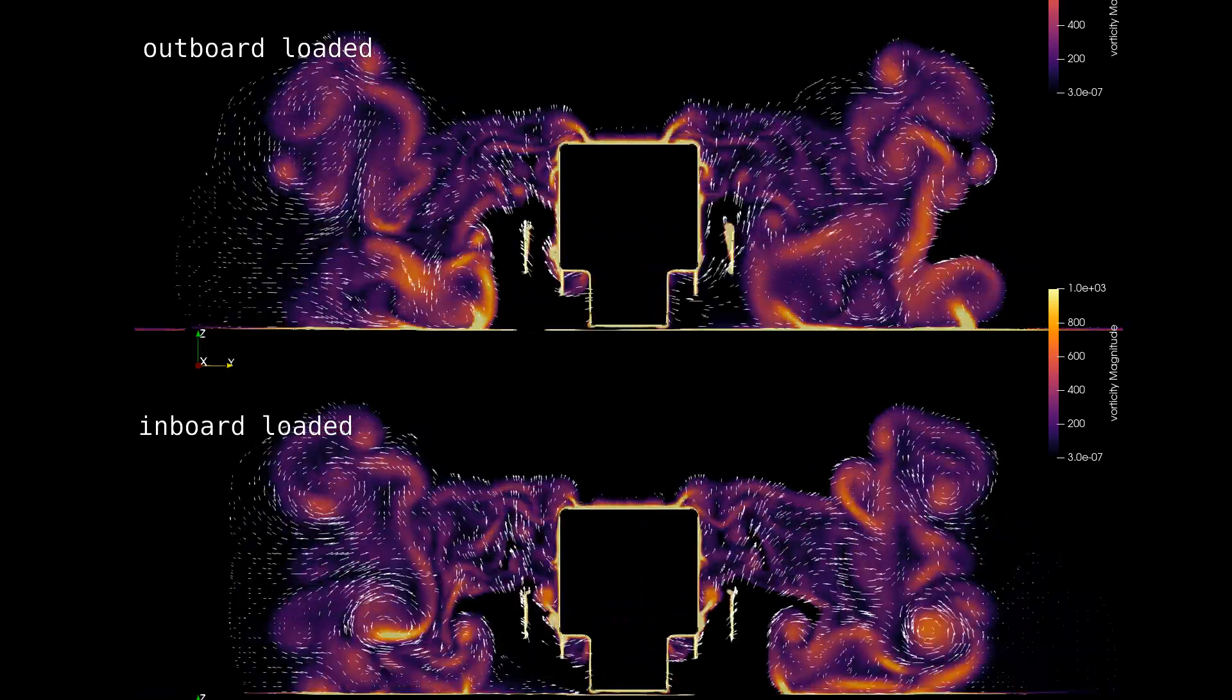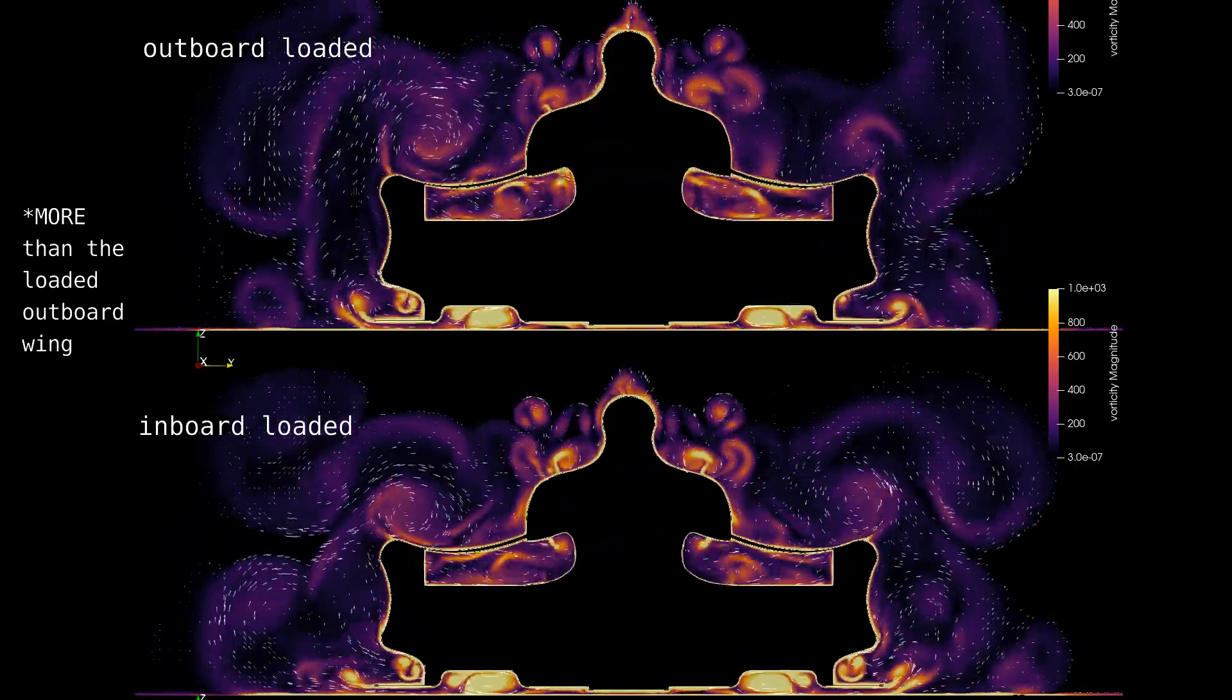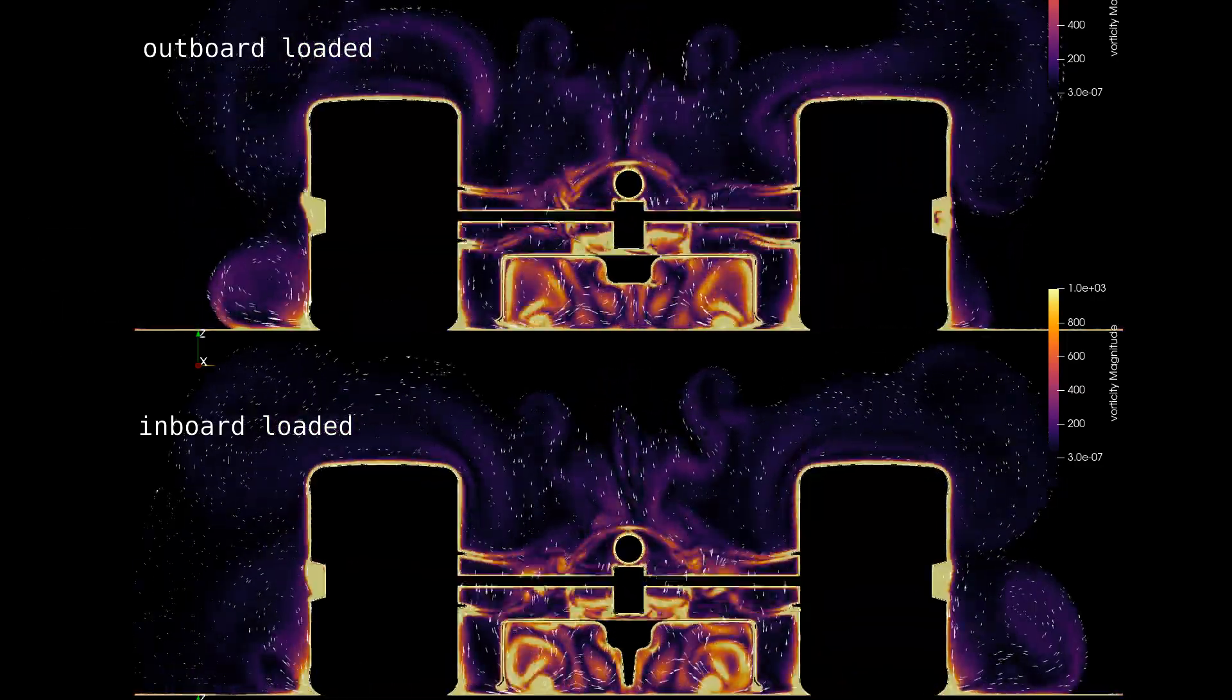A note is that the unloaded wing actually produces less downforce, so there are still issues with this model. Then again the wheel is blocking.